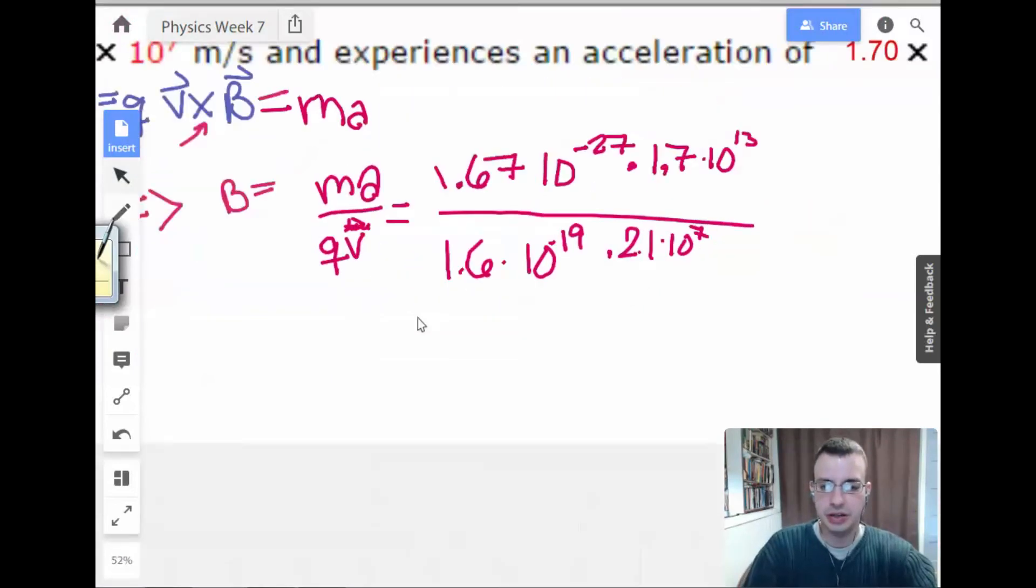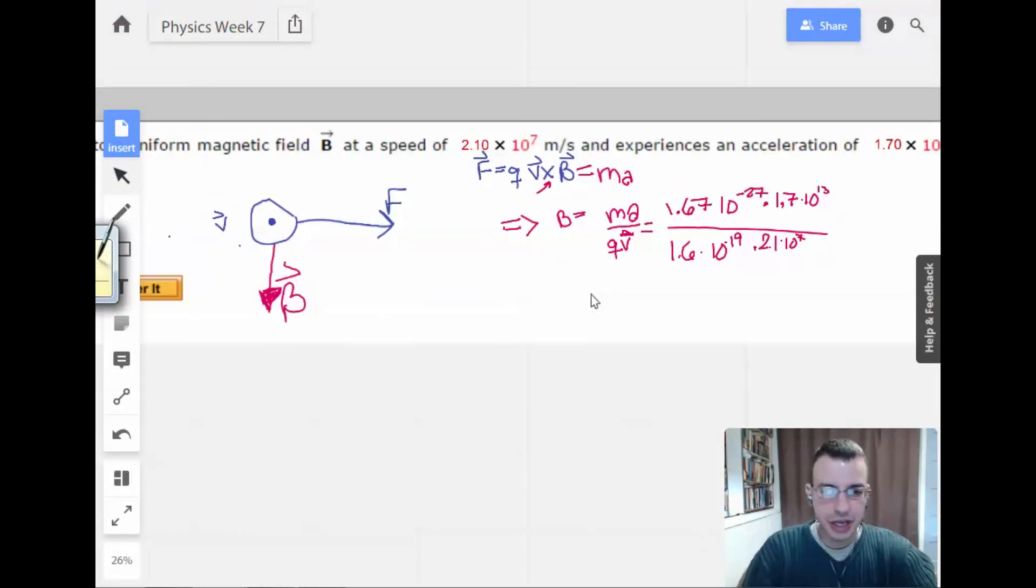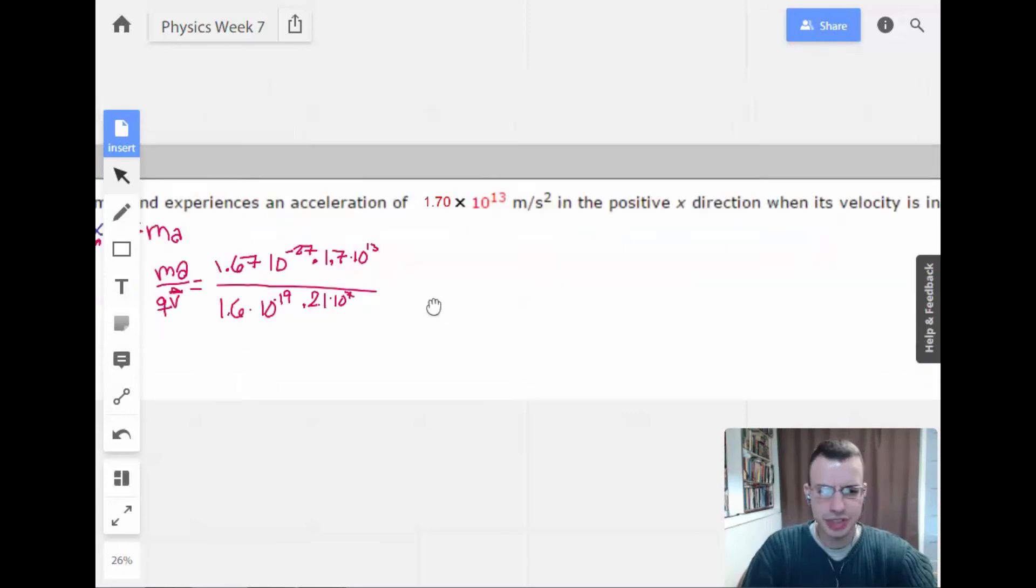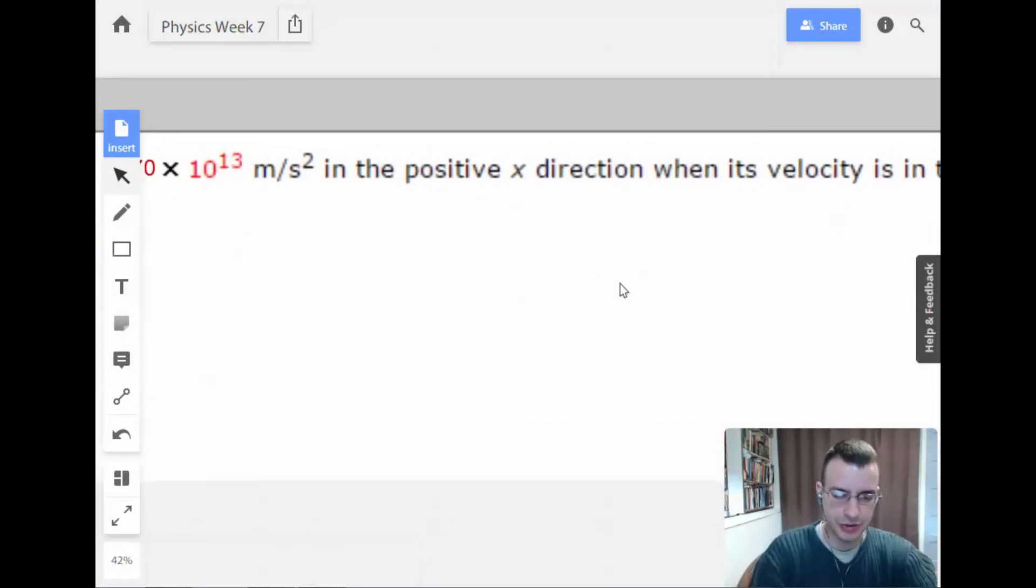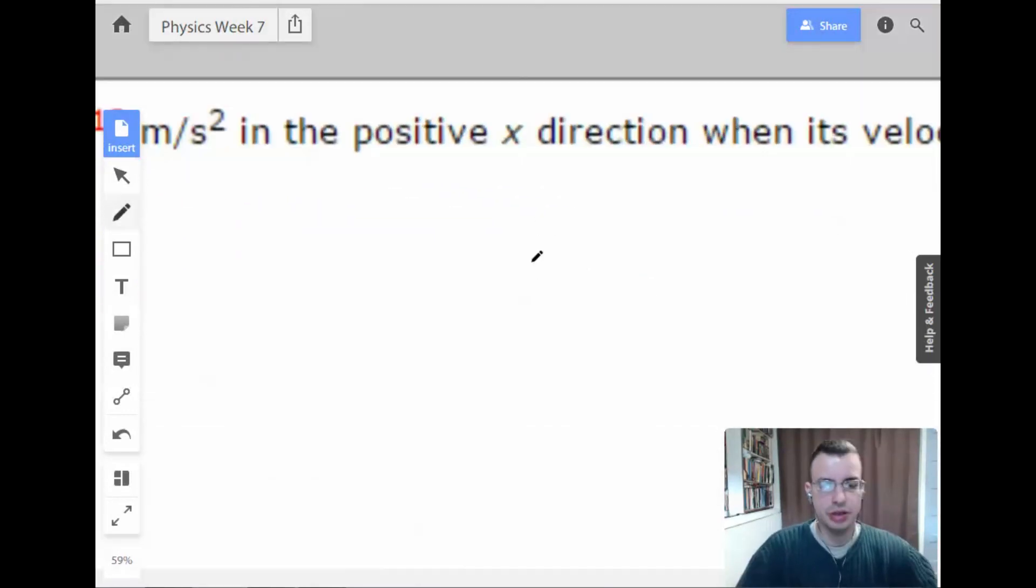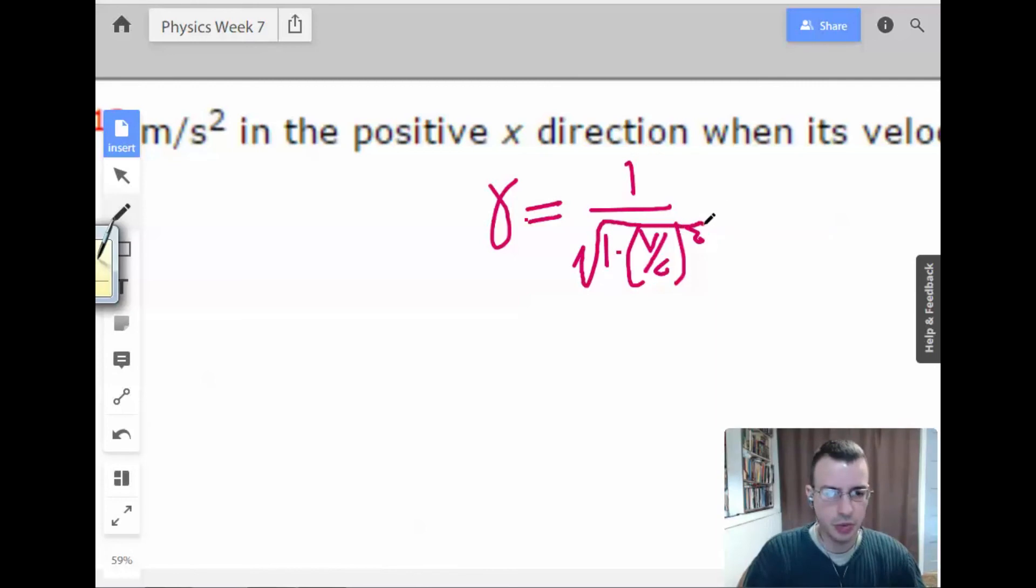All right. So my first thought here then is I get suspicious when anything moves that fast. So I'm going to find out the relativistic mass real quick. What you look for is gamma equals 1 over the square root of 1 minus v over c squared. This is how you figure out when things start going close to the speed of light.